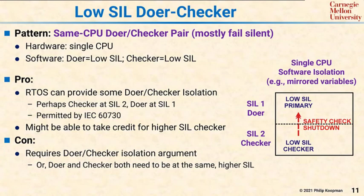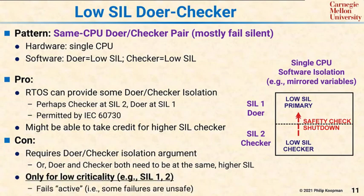The biggest con is that this pattern is only useful for SIL1 and SIL2 — not life-critical patterns. That's because a hardware fault can still cause an arbitrarily bad failure for the entire system; in other words, it fails active. If you need to use something higher than SIL2 or be life critical, then you need one of the more advanced patterns we'll talk about next.